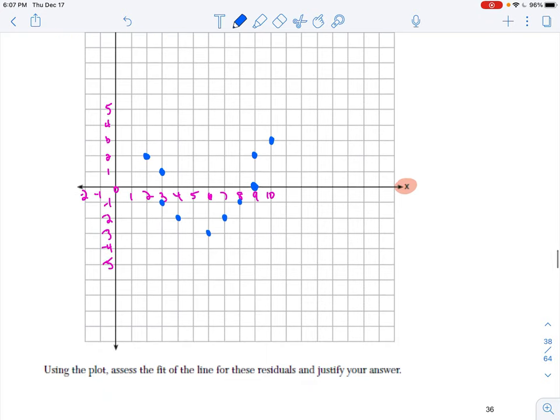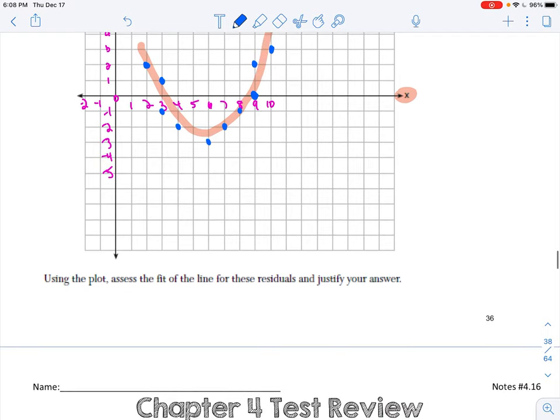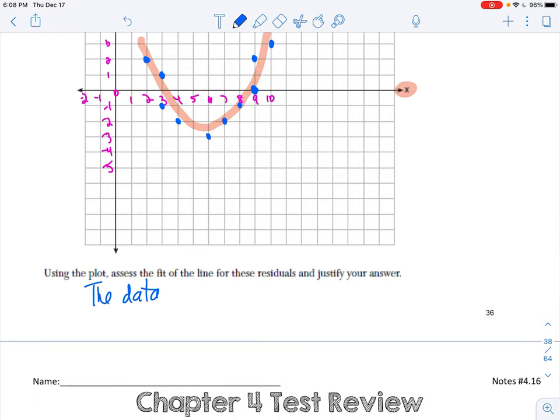All right. So if you look at this, using the plot, assess the fit of the line for these residuals, and justify your answer. So if you look, is it forming a pattern? Well, if I kind of go like this, it looks to me that it's making the smiley face, so pattern is bad. So I'm going to say, the data forms a pattern, so the line is a bad fit. Remember, pattern is bad. You don't want to see a pattern. All right. So that finishes up residuals. So you have your last practice set. It's on pages 41 to 42 in your packet. Go ahead and do that.